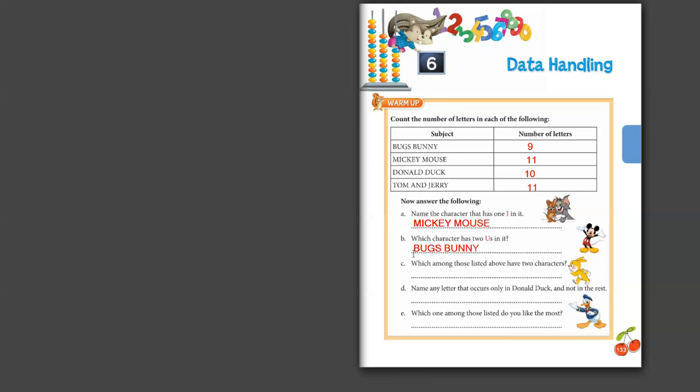Next question: which among these has 2 characters? Bugs Bunny is 1 character, Mickey Mouse is 1 character, Donald Duck is 1 character. Tom is 1 character and Jerry is 1 character, so Tom and Jerry is the one with 2 characters.